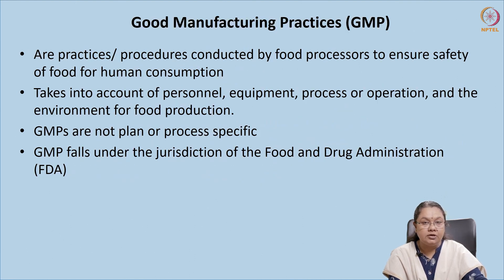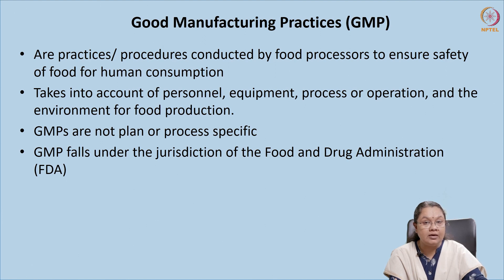Coming to GMP — good manufacturing practices — these are the practices or procedures conducted by food processors to ensure safety of food for human consumption. Most food products are mainly aimed for human consumption, though even animal feed or pet foods must now follow GMPs. Food products meant for humans should be safe and should not cause any hazard or disease. Quality should be maintained from the beginning, from the point where it is processed, ensuring it is safe for consumption.